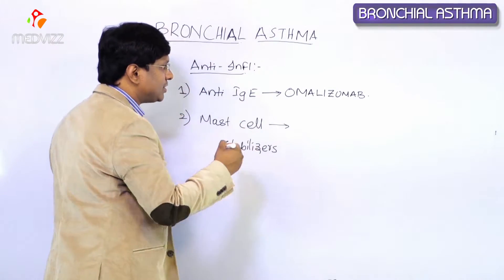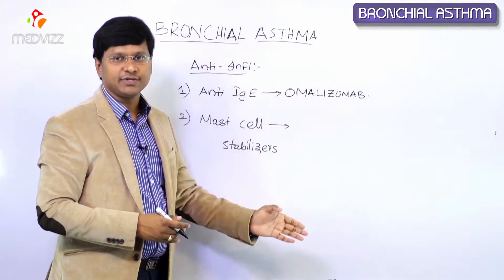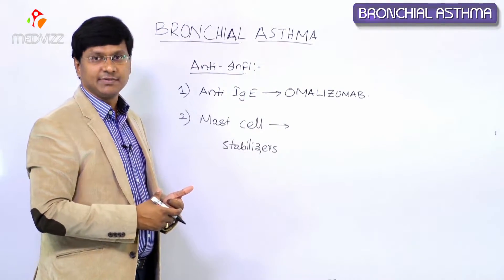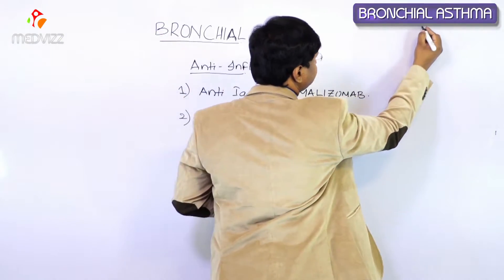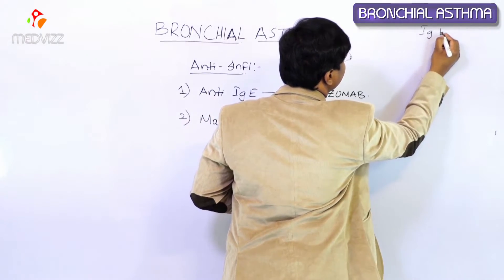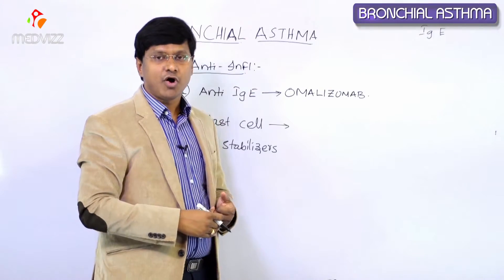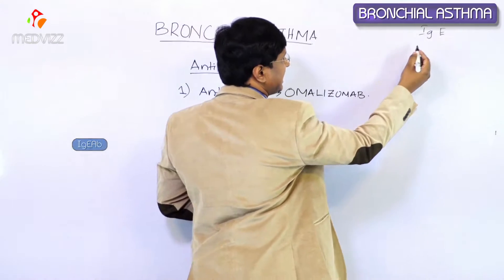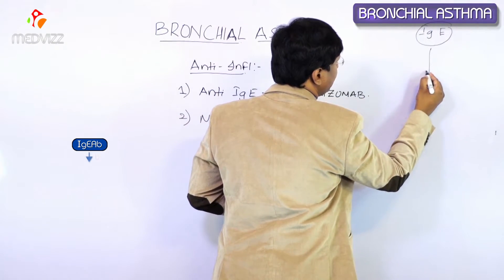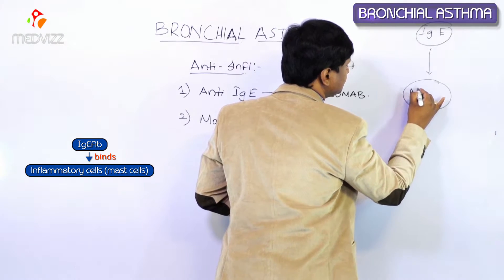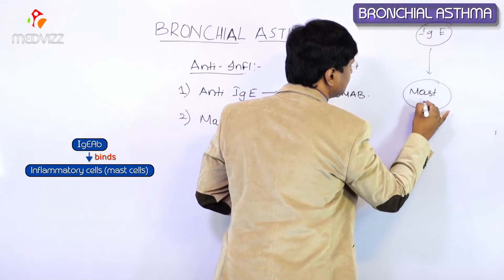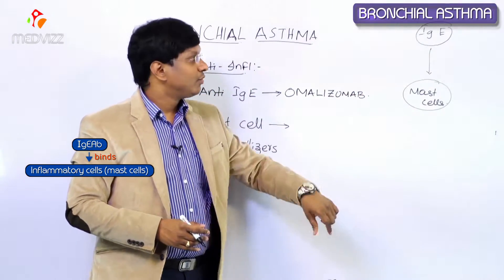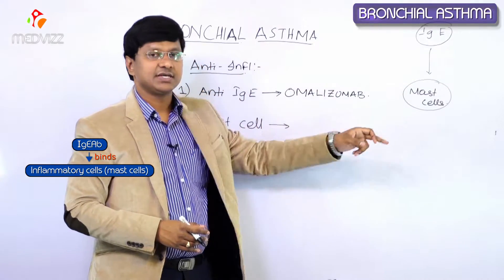Before discussing mast cell stabilizers, let me give you the sequence of the pathology in bronchial asthma so you can understand these anti-inflammatory drugs more comfortably. We have the IgE antibody which is formed whenever the individual is exposed to the allergen. This IgE antibody comes and binds to the mast cells.